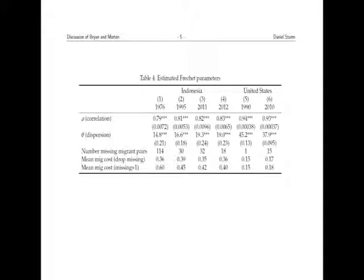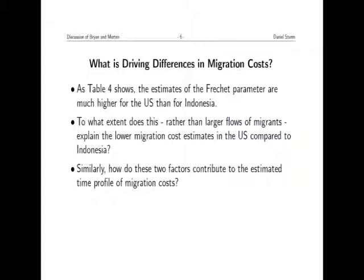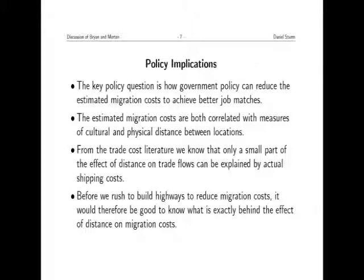My question about this is: they have a reasonable identification of theta, but it would be good to know to what extent differences in theta contribute to the differences in migration costs seen in the U.S. and Indonesia, versus differences in actual observed migration flows. Similarly, to what extent do changes in theta and changes in actual migration flows contribute to the changes over time? We see theta falls in the U.S., for example, which would be consistent with the increase in migration costs that you back out. It's a very reasonable exercise, but it would be good to get more of a handle on what is really going on quantitatively.